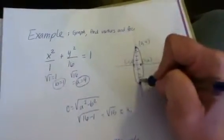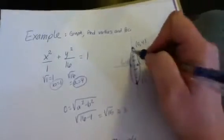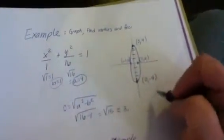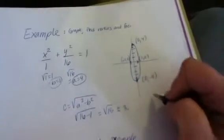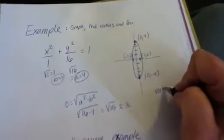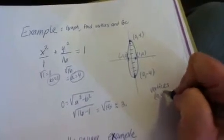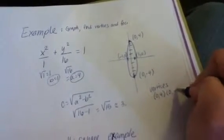So because this is so skinny, the foci are going to be very close to the vertices. So if we want to actually list the information that they've asked us for, we would say the vertices are at (0, 4) and (0, -4),